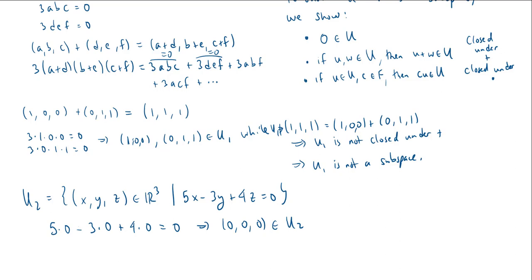Notice, by the way, I'm not starting by writing (0,0,0) is in U₂ and implying something from that. This is another common mistake people are going to make. They're going to start from the conclusion and then write that the conclusion implies 5·0 - 3·0 + 4·0 = 0. No, no, no. It's the other way around. This implies that (0,0,0) is in U₂.